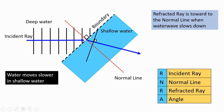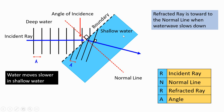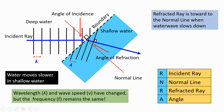Extend the other wavefront lines parallel to the reference line. Observe what happens to the wavelength: the wavelength in deep water is greater than the wavelength in shallow water, so there is a decrease in wavelength and a decrease in speed. The frequency remains the same. The angle of incidence is between the incident ray and the normal line, and the angle of refraction is between the refracted ray and the normal line. The wavelength and speed both decrease, and the frequency remains the same.